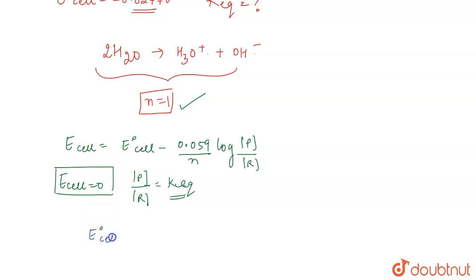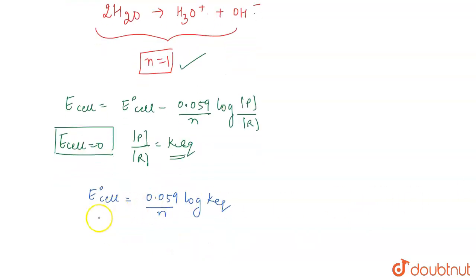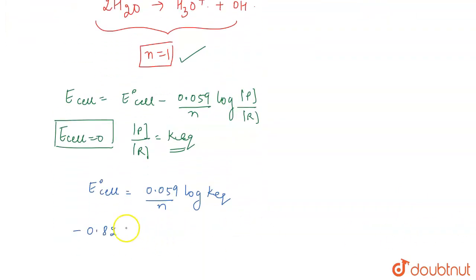So basically, E°cell is -0.8277. So -0.8277 times n, which is equal to 1, divided by 0.059, this is going to be equal to log of equilibrium constant.